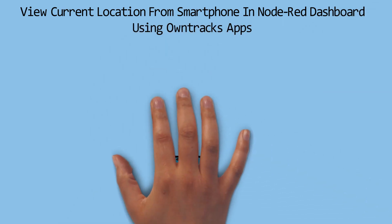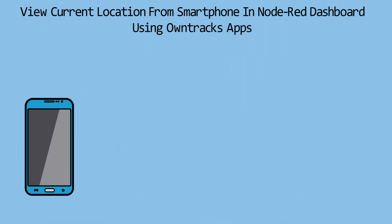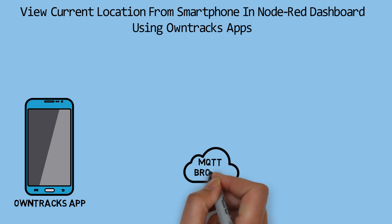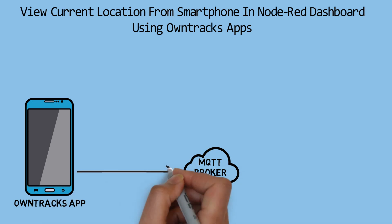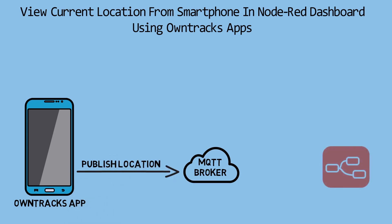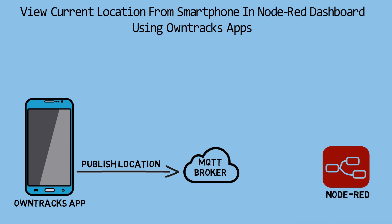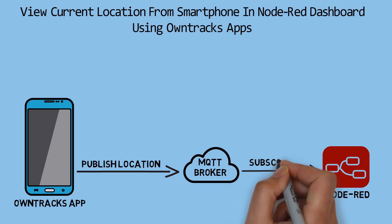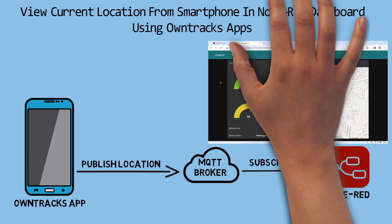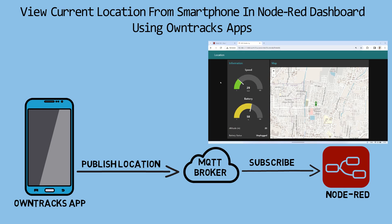This is the concept. On the smartphone, we'll use OwnTrax to obtain the current location. From OwnTrax, the location data will be published to an MQTT broker. Node-RED will subscribe to receive the location data sent by OwnTrax. Then the location data will be displayed in Node-RED using a map, along with several other visualizations such as a gauge and text.